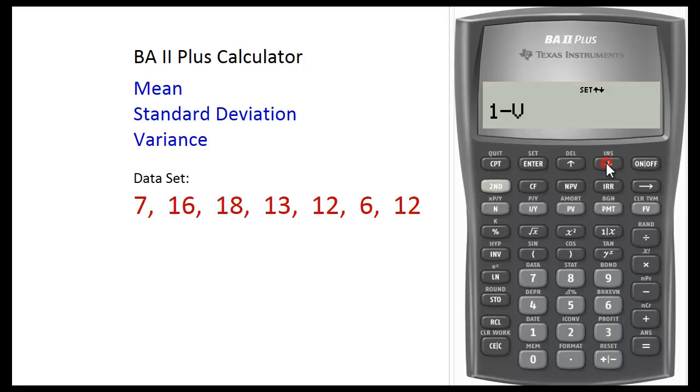Press the down arrow button. N equals 7, indicating that we entered 7 values. Press the down arrow button again. X bar, the sample mean for this data set is 12.